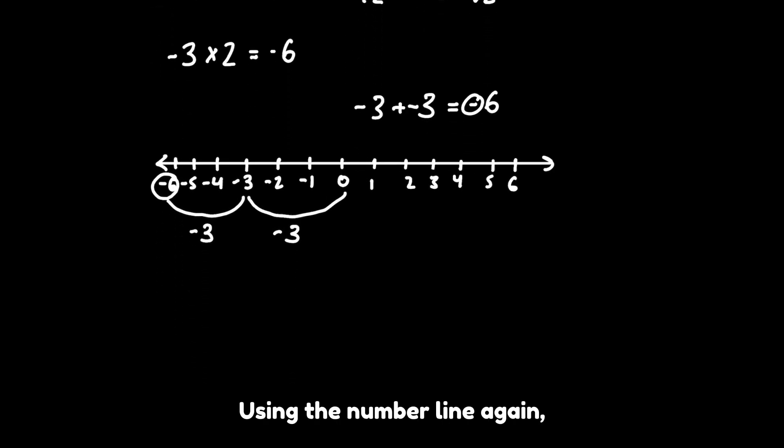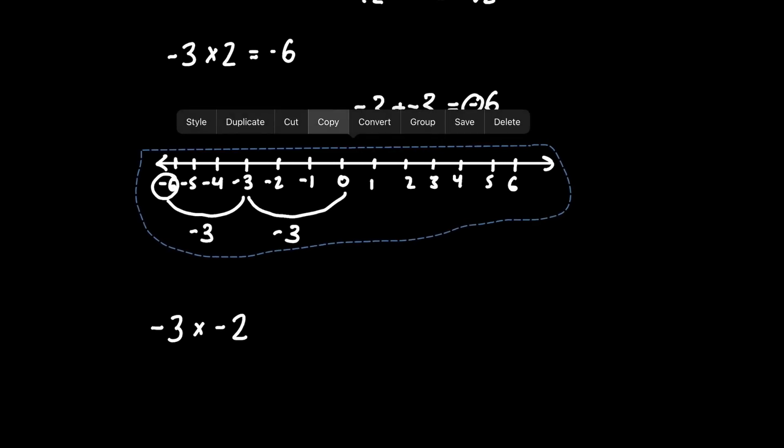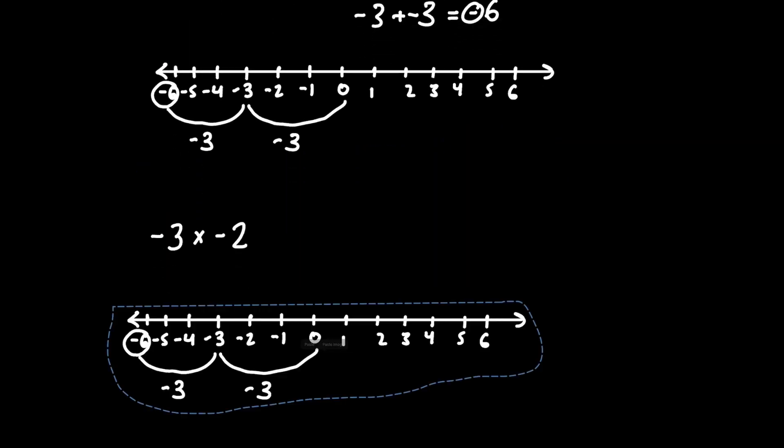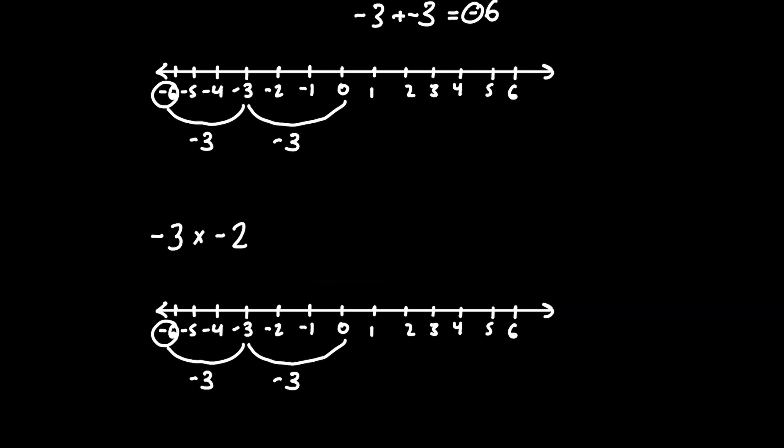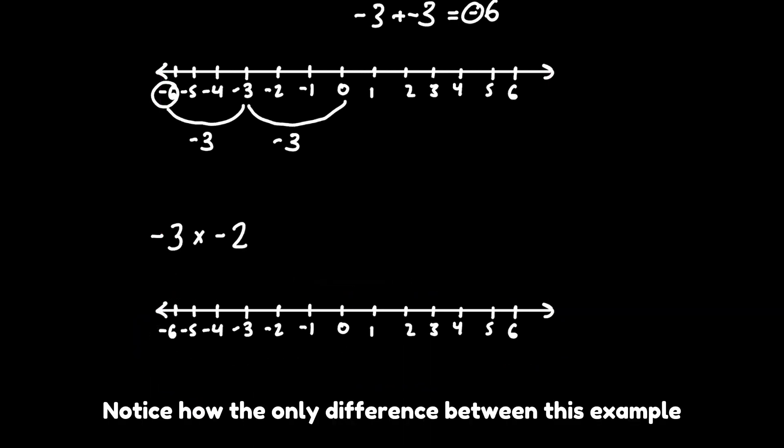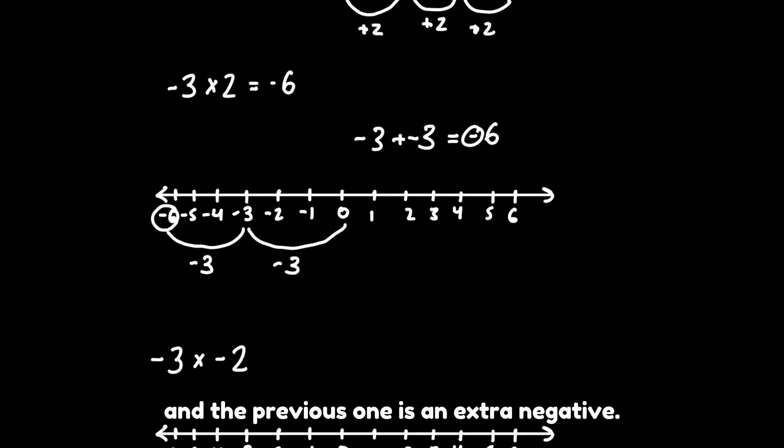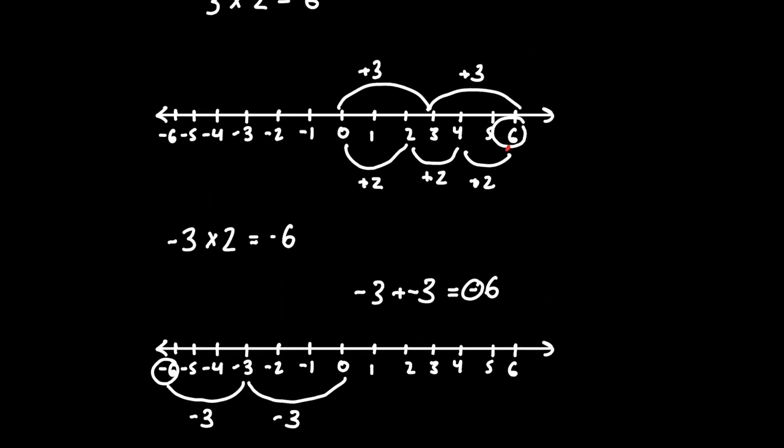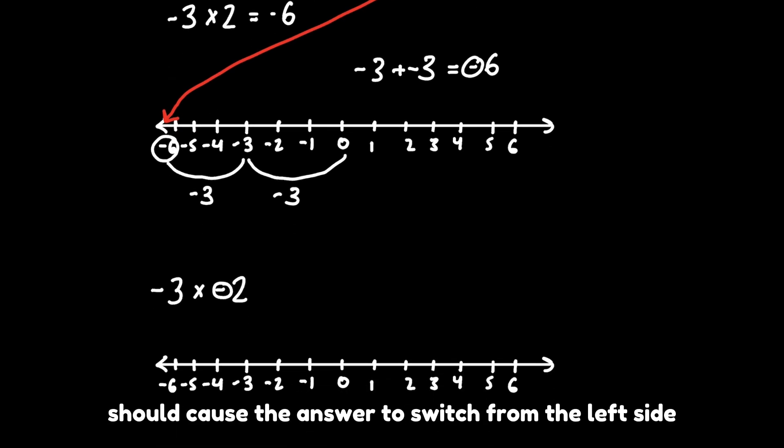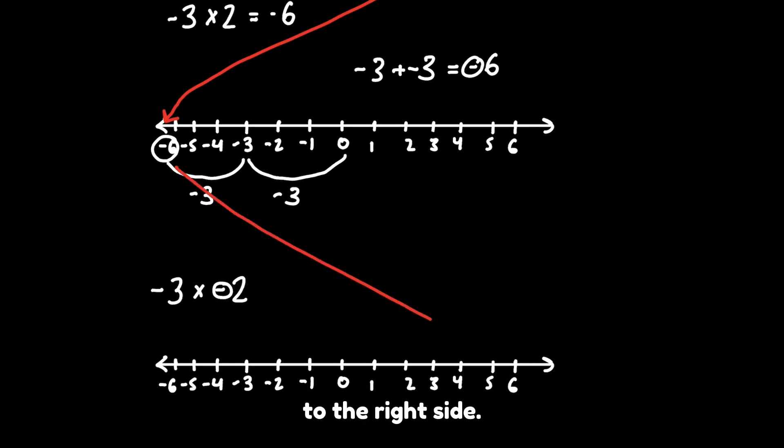Using the number line again, let's look at negative 3 times negative 2. Notice how the only difference between this example and the previous one is an extra negative. So, if a negative sign causes a number to switch sides on a number line, this extra negative should cause the answer to switch from the left side to the right side.